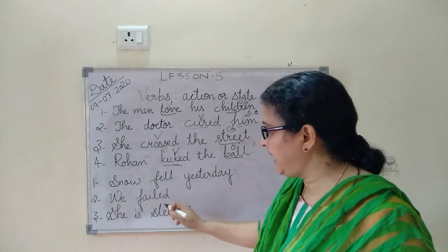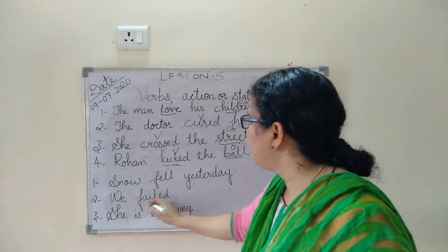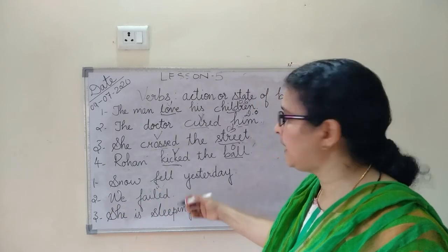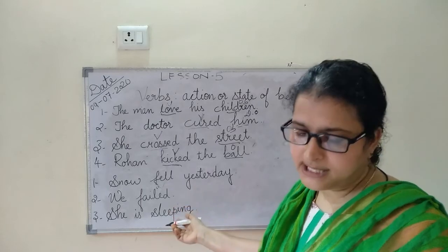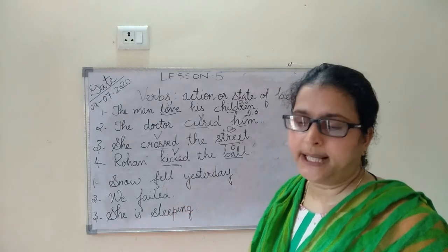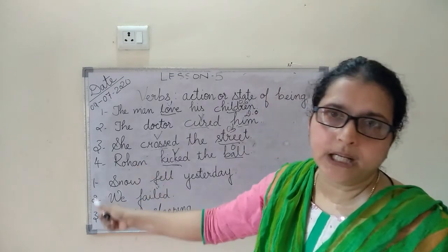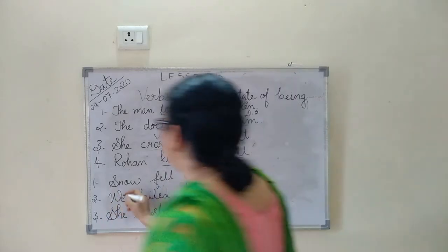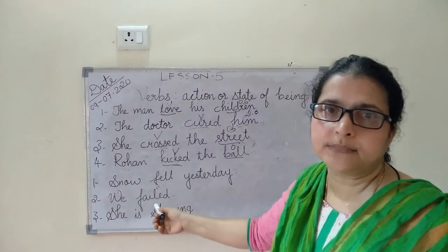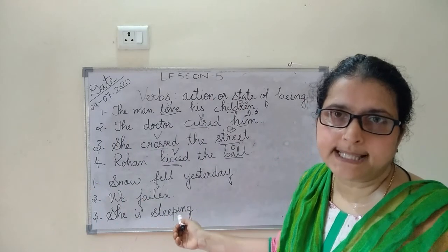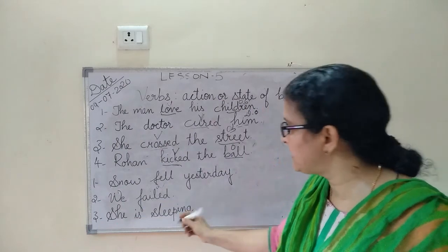Second example: We failed. We failed in which subject? Nothing is given, so there is no direct object linking with the subject. The sentence is incomplete — so failed is an intransitive verb. Third: She is sleeping — here also there is no object, so it is an intransitive verb.